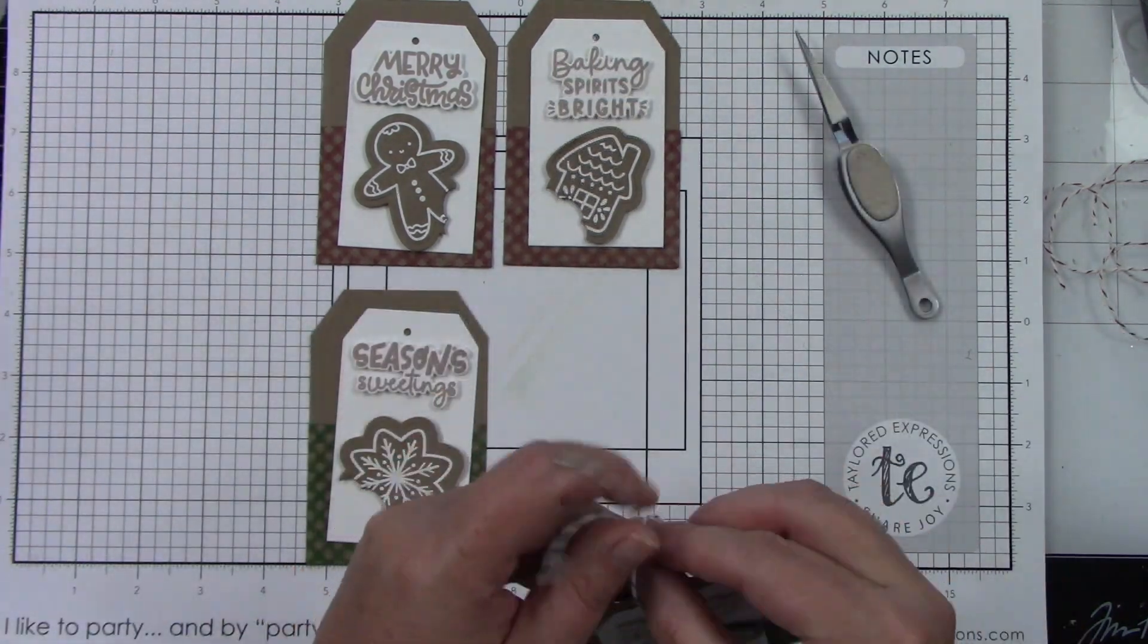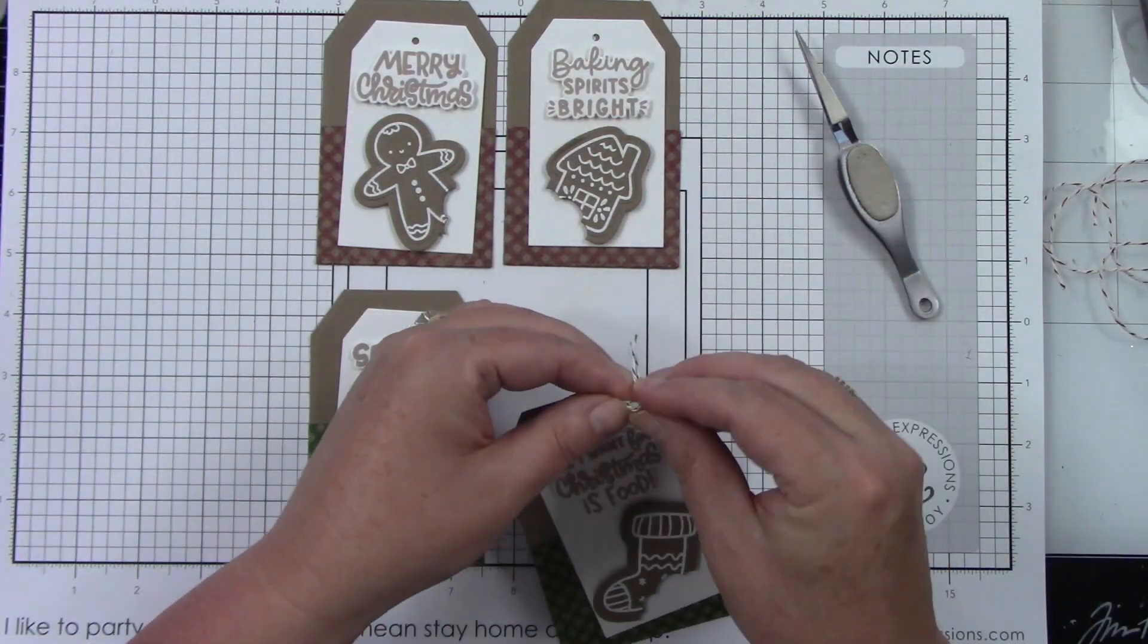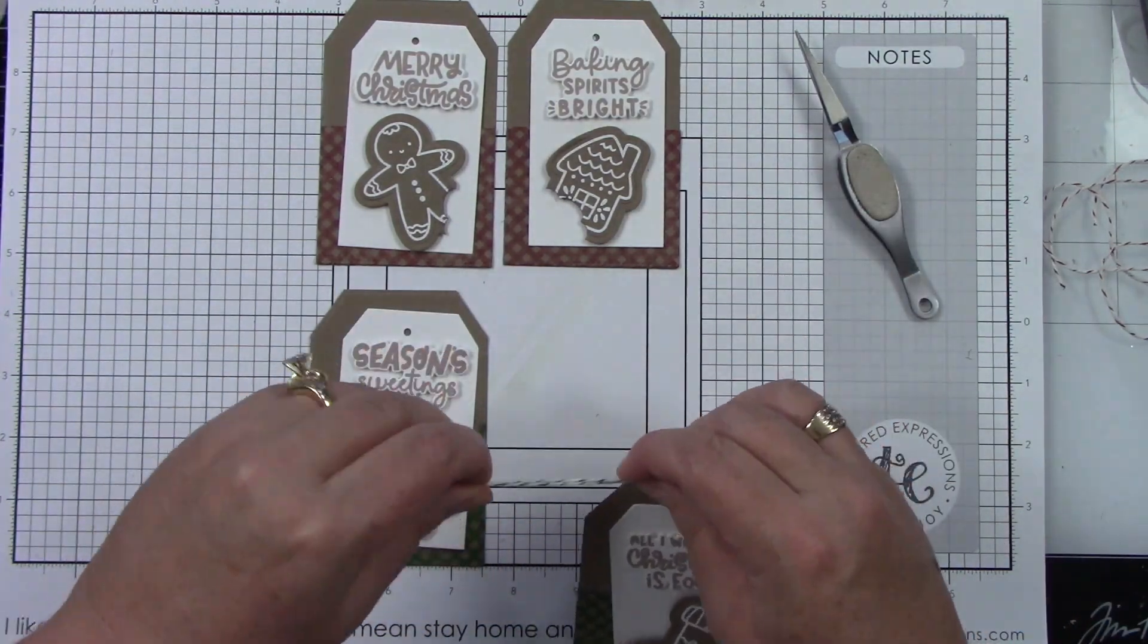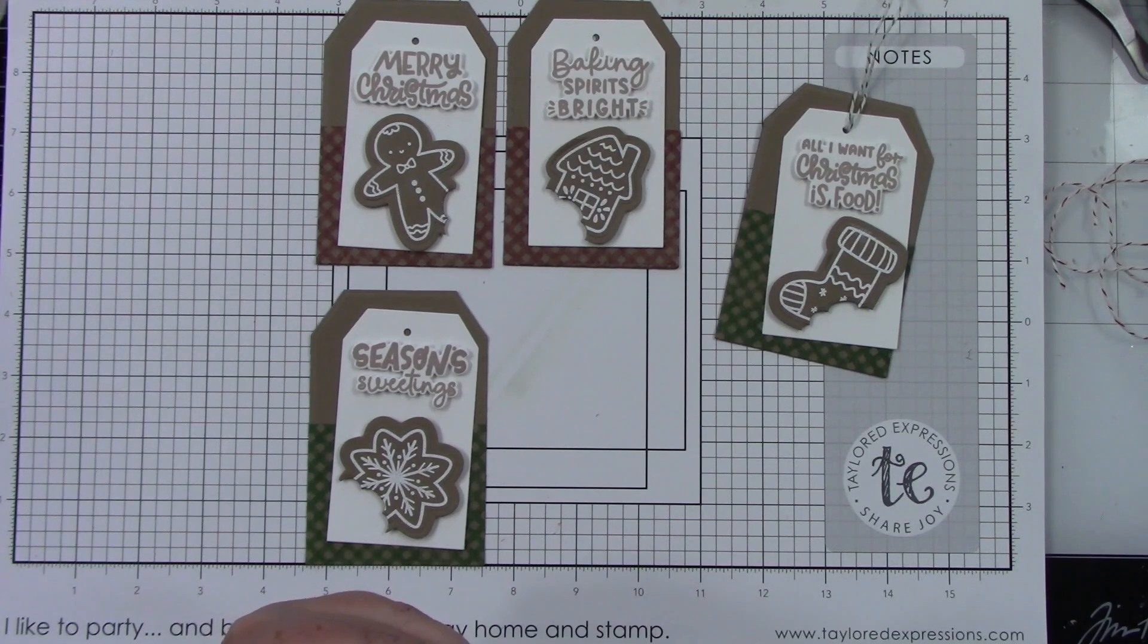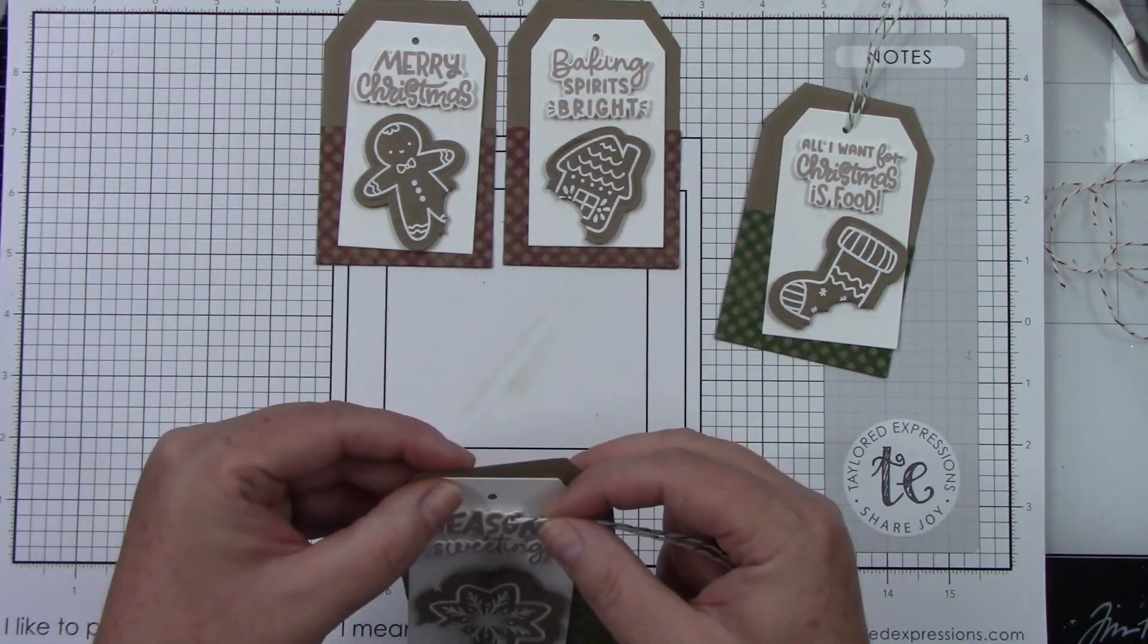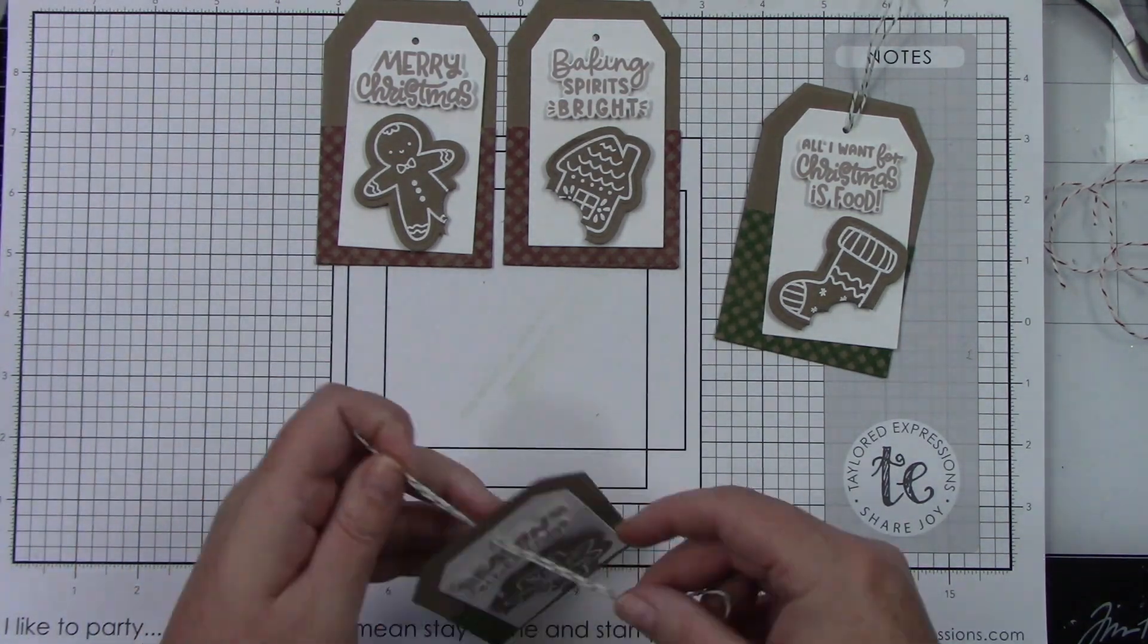I also had a hole punch in my stash that I used to die cut the hole at the top of both of these tags. I'm going to run that baker's twine through and then tie a little knot at the top, and I'm going to do that for all four of these. They are so cute.